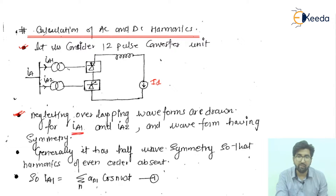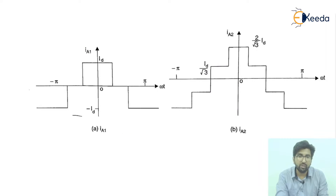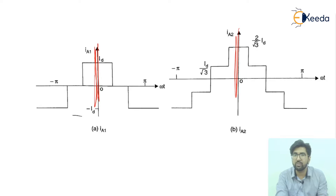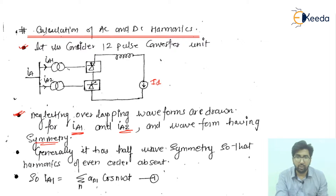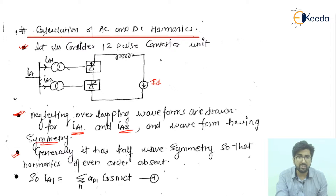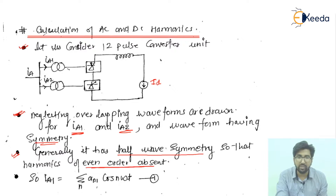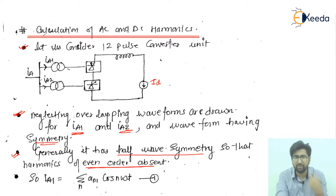Neglecting the overlapping, waveforms are drawn for Ia1 and Ia2 having symmetry. If we ignore overlapping, the waveform can be drawn simply and it also has symmetry about the axis. Generally it has half-wave symmetry, so the harmonics of even order can be eliminated — even order harmonics are absent.